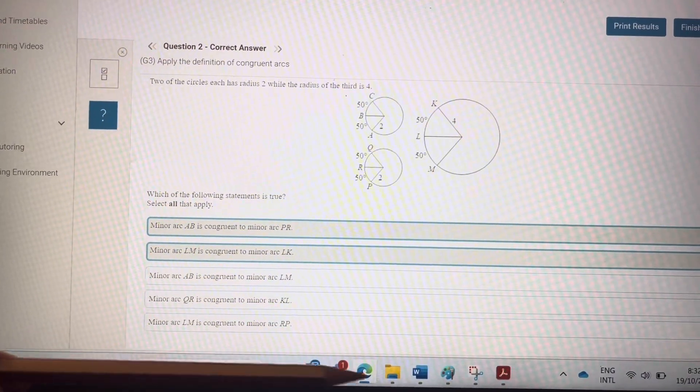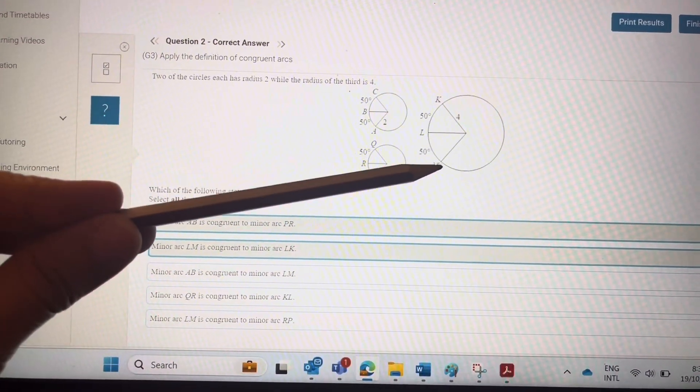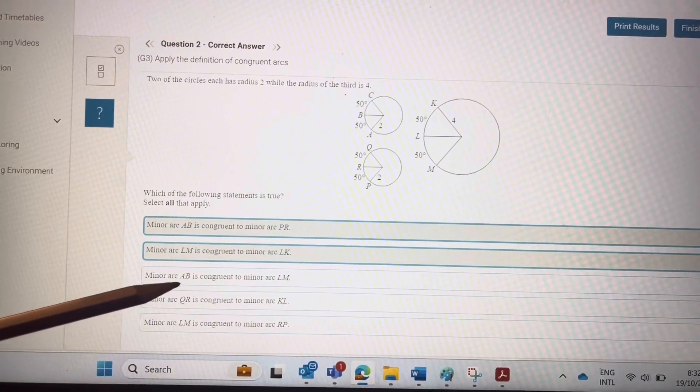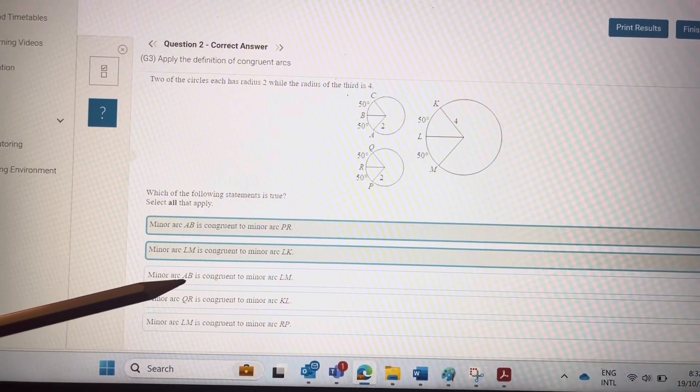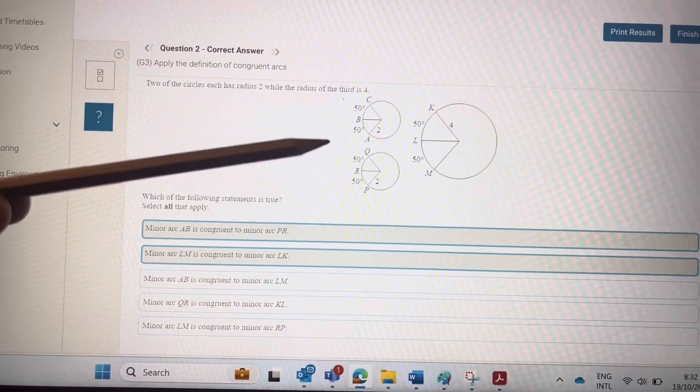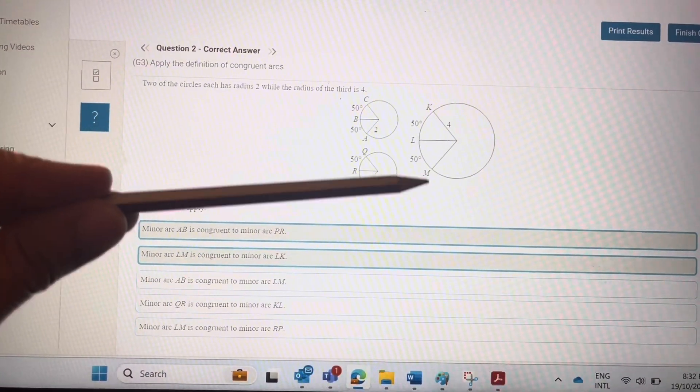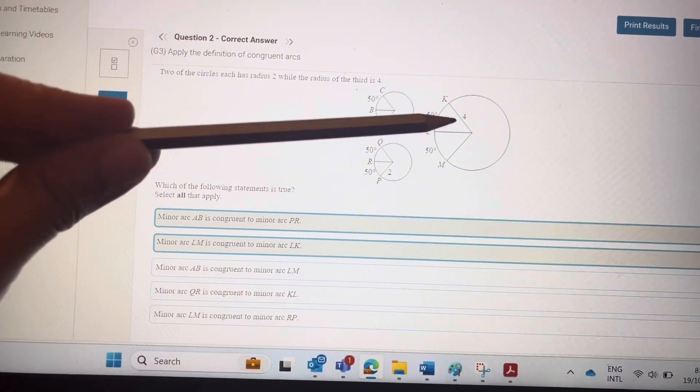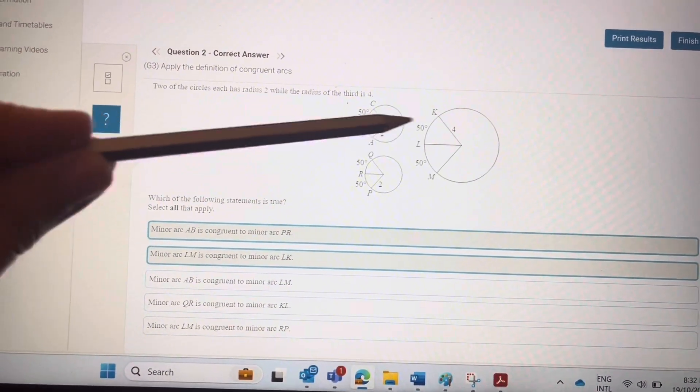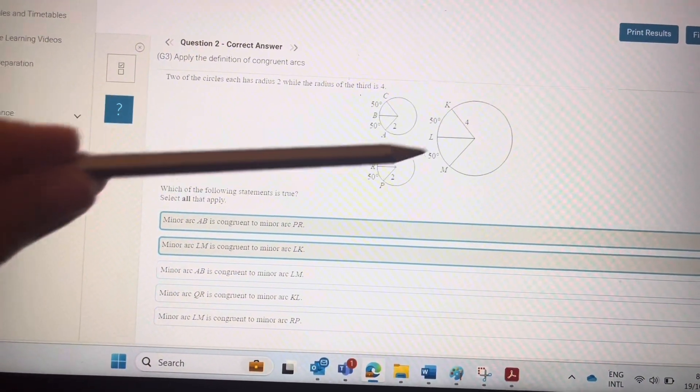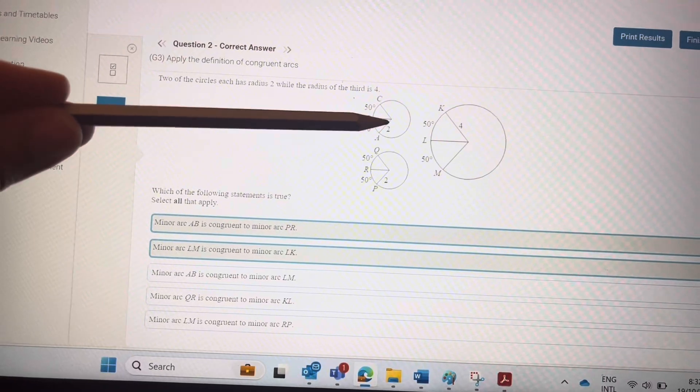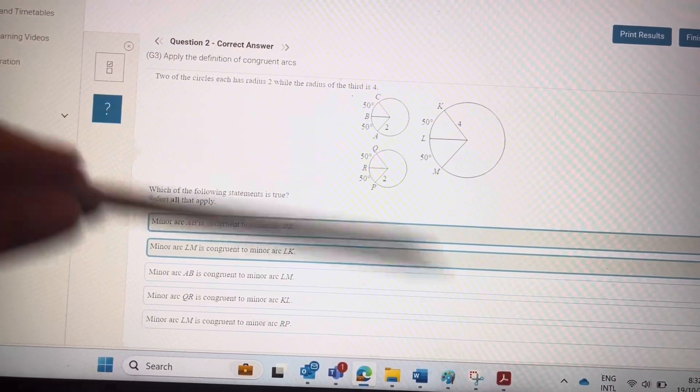Minor LM is congruent to minor LK. LM and LK, yes. The rest all is wrong because it's telling AB is congruent to LM. AB is congruent to LM. It is not congruent because this radius is 2 and this radius is 4. So these two angles are not congruent, and these two angles are not congruent. So a relation between this and this or this and this is not correct. Only these two are congruent, so the relations here are correct.